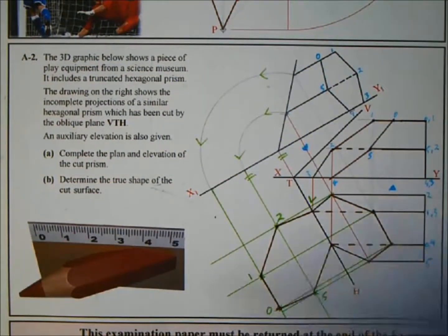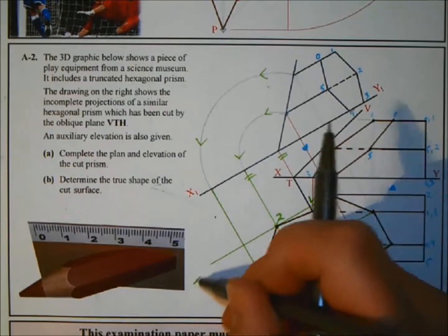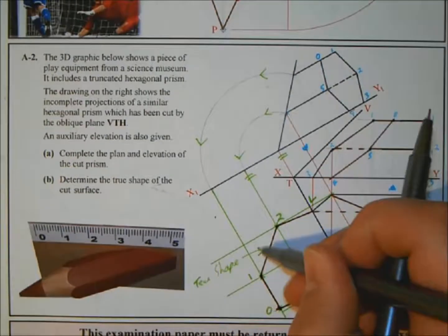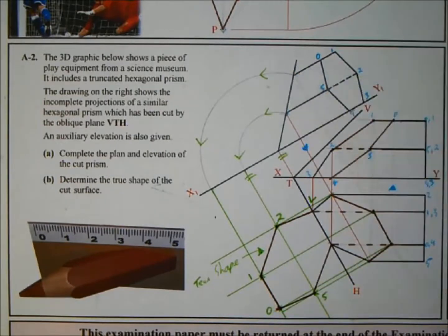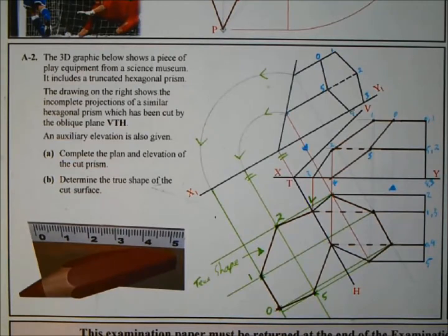And there is your true shape — that's the true shape of the cut surface on the prism. Part A, complete the plan and elevation of the cut prism, is done. Part B, determine the true shape of the cut surface, is also done. A nice complete plain question. I hope that helped — if it did, please leave a like, and if you want to see certain topics done, let me know in the comments below.